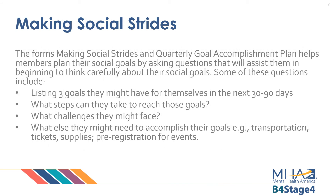The forms making social strides and quarterly goal accomplishment plan help members plan their social goals by asking them questions that will assist them in beginning to think carefully about those goals. Some of those questions might include listing three goals they might have for themselves in the next 30 to 90 days, what steps can they take to reach those goals, what challenges they might face, what else they might need to accomplish those goals — such as transportation, tickets, supplies, or pre-registration for events.